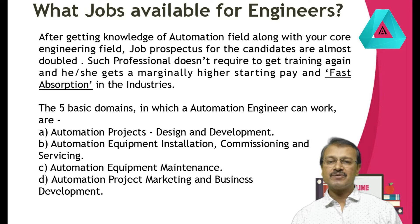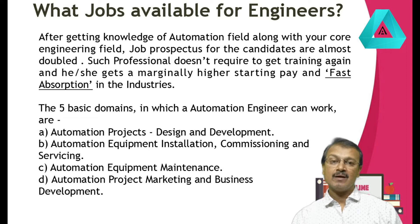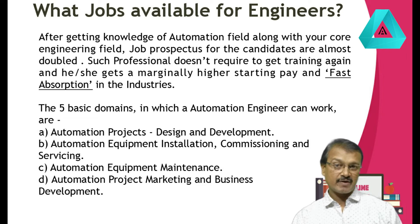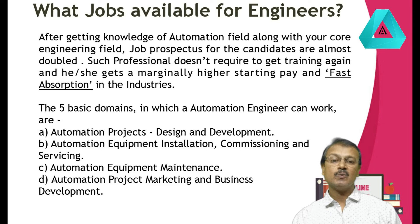The five basic domains in which an automation engineer can work are: first, automation projects — design and development of automation systems, where you can build your own machines. Second, automation equipment installation, commissioning and servicing — you can install and run designed automation systems and repair them if required. Third, automation equipment maintenance — you can work in industries as an automation technician or maintenance engineer. Fourth, automation project marketing and business development — you can promote automation products, suggest automation applications to end customers, and develop your employer's business.